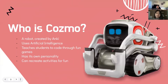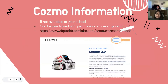Now you may be asking, who is COSMO? COSMO is a robot created by the company Anki. It uses artificial intelligence in order to teach students how to code through fun games. It has its own personality and can recreate activities for fun. If COSMO isn't available at your school, it can be purchased with the permission of a legal guardian at digitaldreamlabs.com.